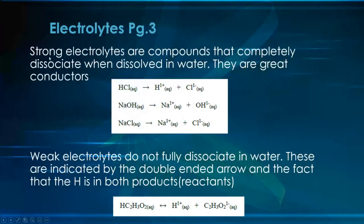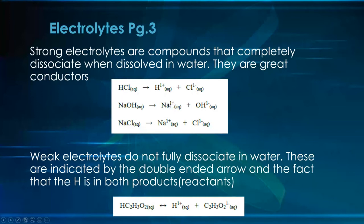Strong electrolytes are strong because they are ionic compounds that completely dissociate when dissolved in water, making them great conductors. Examples include hydrochloric acid, sodium hydroxide, and salt in aqueous solutions. When deconstructed, they produce individual ions — a hydronium ion and a chloride ion, or sodium and hydroxide — completely separate from each other. This complete dissociation frees up a large number of ions, which is why we get strong conductivity.